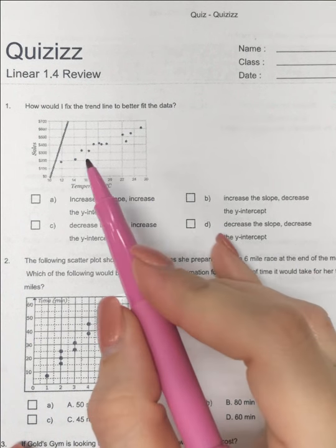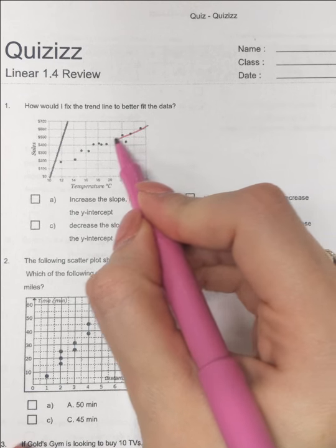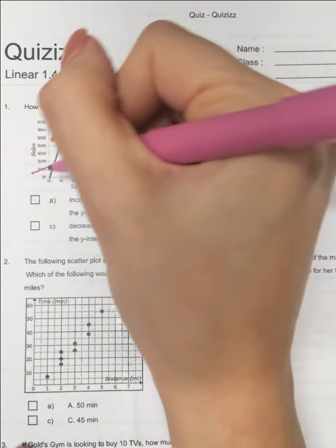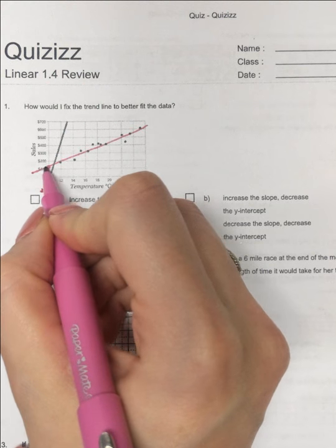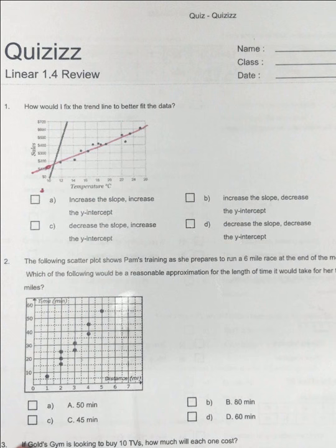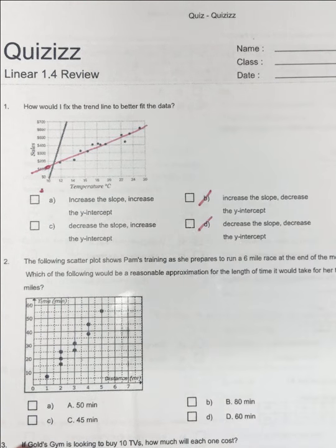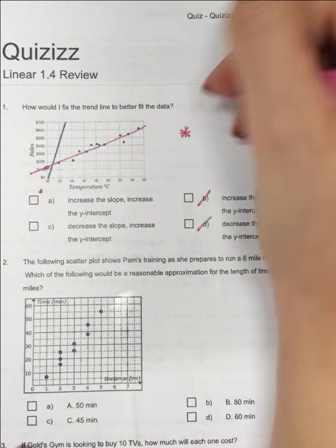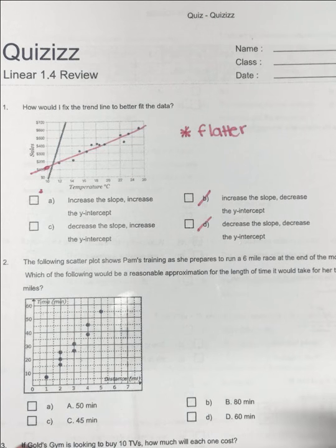So number one, how would I fix the trend line to better fit the data? Trend lines need to be going through the middle of the dots. One of the easiest things to look at is the y-intercept. It was crossing somewhere down here. Now it's crossing up here. So I'm increasing the y-intercept. So you could automatically eliminate B and D.